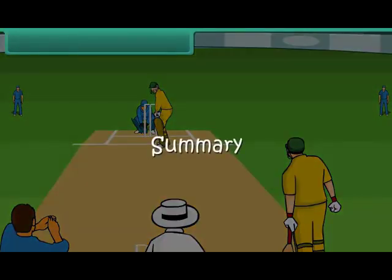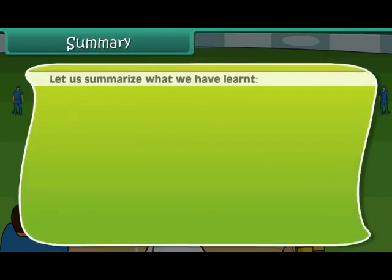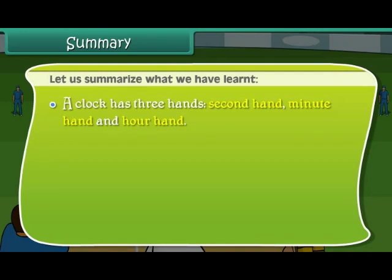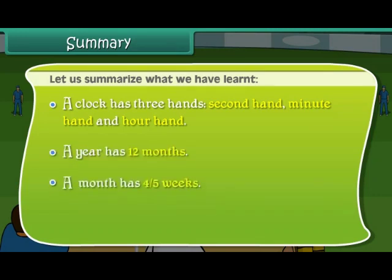Summary. Let us summarize what we have learned. A clock has 3 hands: the second hand, minute hand and hour hand. A year has 12 months. A month has 4 or 5 weeks. There are 7 days in a week.